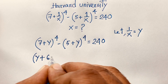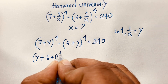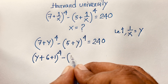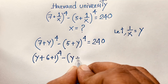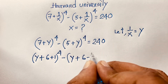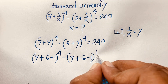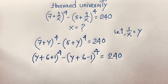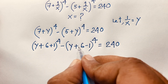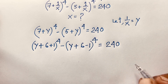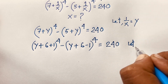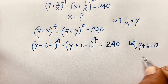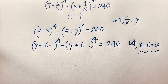Now I rewrite: 7 is 6 plus 1, so it becomes (y + 6 + 1). And 5 is 6 minus 1, so it becomes (y + 6 - 1). Both expressions share y + 6, so let a = y + 6.